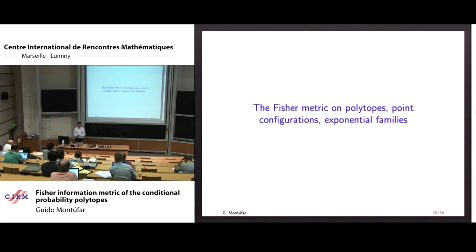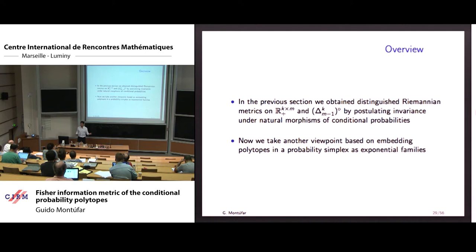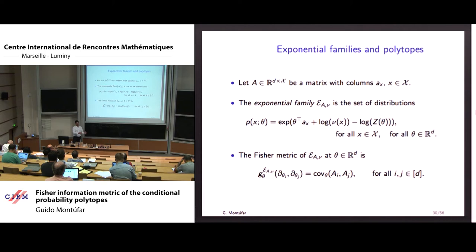Let me move on to the second approach to defining Riemannian metrics on polytopes and more generally exponential families. Rather than postulating invariance with respect to natural morphisms, another viewpoint is to take whatever space we want to define a metric on, embed it in the simplex, and pull back the geometric structures from there. You can do this very nicely for polytopes, because exponential families have two ways of describing them — especially with a finite number of events, you can parameterize them in terms of polytopes, identifying this polytope with an exponential family in the simplex and pulling back the geometry from the simplex.